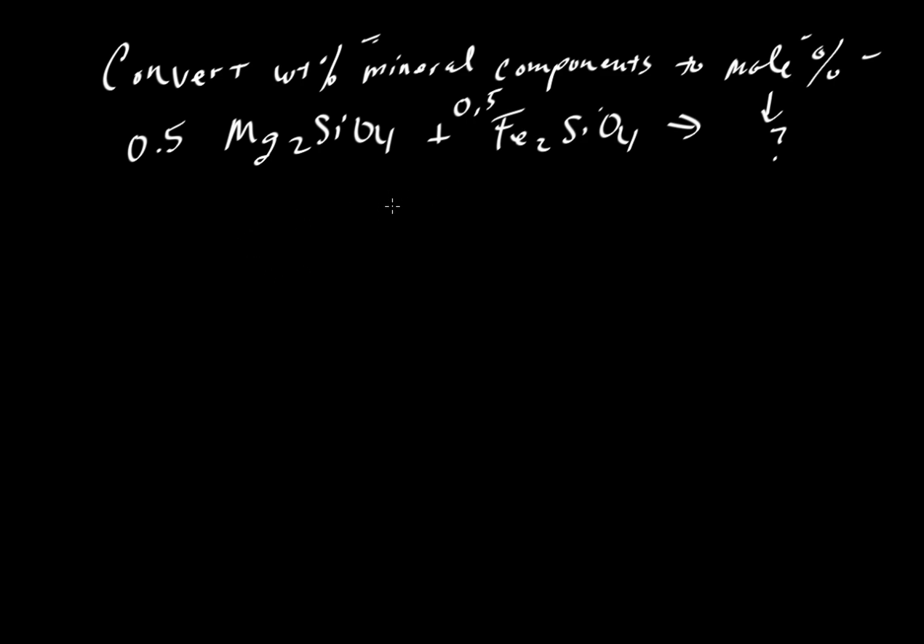Let's take precisely this example as a case study. So for forsterite, we have a molecular weight of 140.7 grams per mole. So forsterite is this guy right there. And then fayalite is this fellow over here, the iron end member.